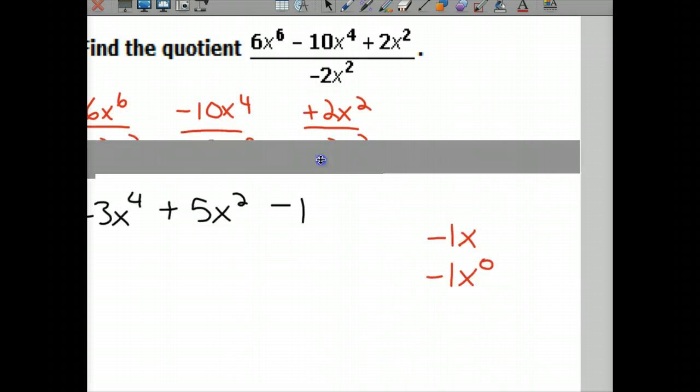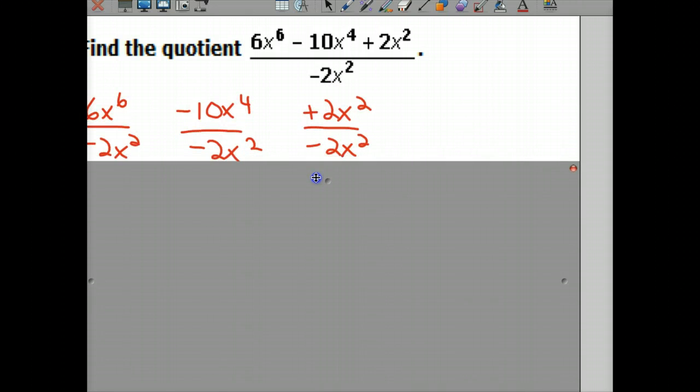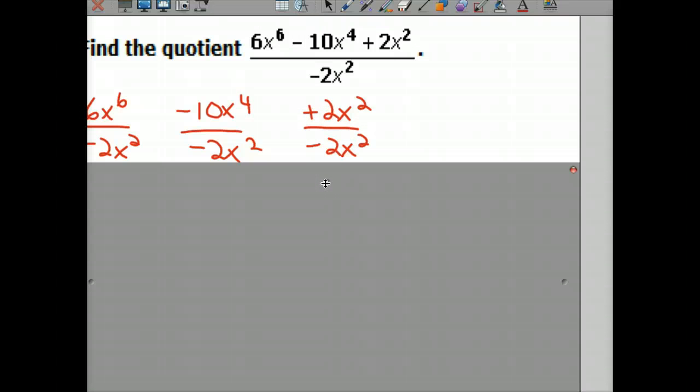So what we do is we write 6x⁶ divided by negative 2x², negative 10x⁴ divided by negative 2x², and positive 2x² divided by negative 2x². Now the rule I didn't teach you yesterday - number times number is normal, number divided by number is normal.